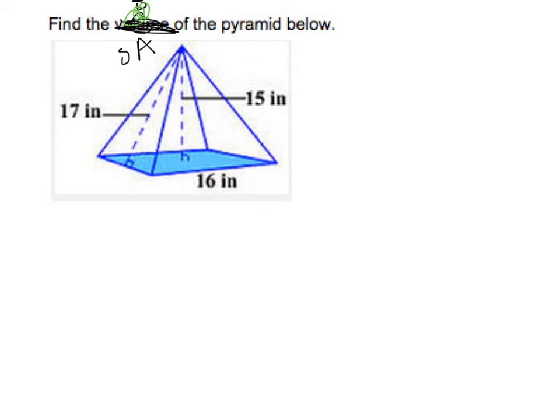So it says find the SA or surface area of the pyramid. So we want to split this pyramid. We want to look at all the faces by splitting it into five different shapes because we're going to find the area of each shape individually and add those all together.